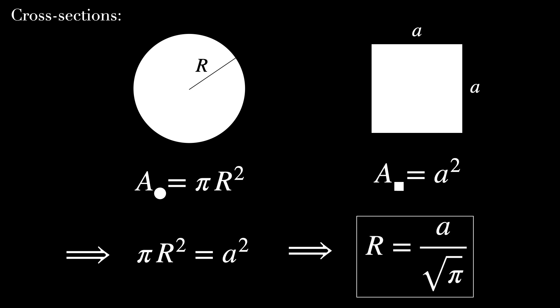I want the two cross-sectional areas to be the same, and this for every height. So let's start with the height y equals 0, in other words the basis. Their areas must be the same. The area of the circle is pi times capital R squared, and the area of the square is just a squared. Since these two areas must be the same, we get that capital R equals A over the square root of pi. That's our condition.